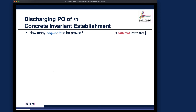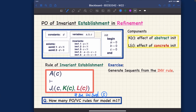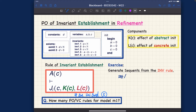The number of sequents to be proved equals the number of concrete invariants — five in our case. I'll show you two of them: invariant number four and invariant number five. Let's make sure these two concrete invariants are actually established. The way we derive these is very similar to how we did invariant preservation — we have to think about the post-states. So we're talking about two sequents for the init events: one for invariant number four and one for invariant number five, both dealing with invariant establishment.